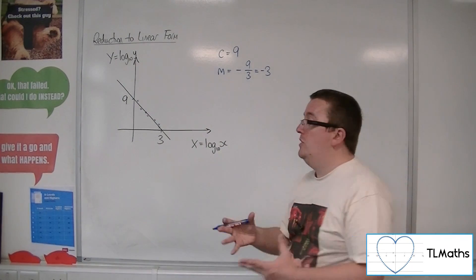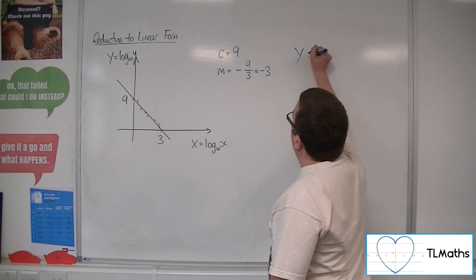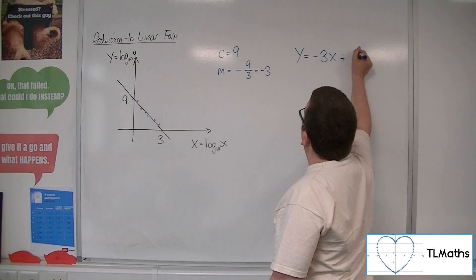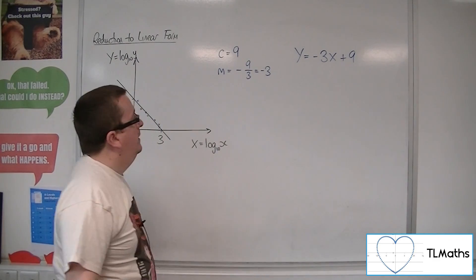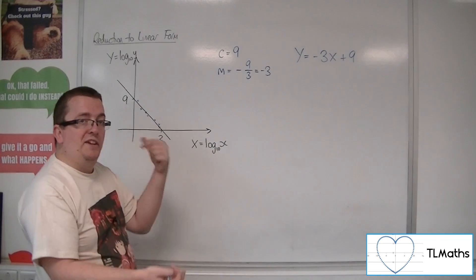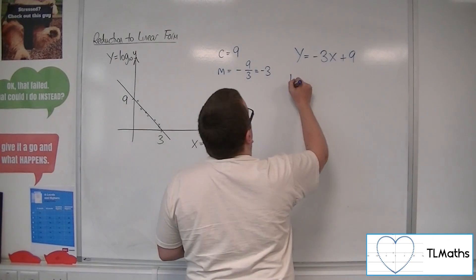So the equation of that line, you could write as Y equals minus 3X plus 9. Now, because we know that X and Y represent log 10X and log 10Y, we can put those back in.